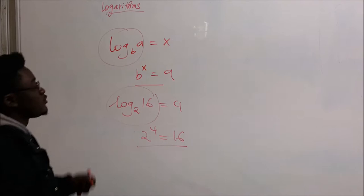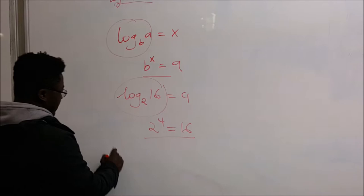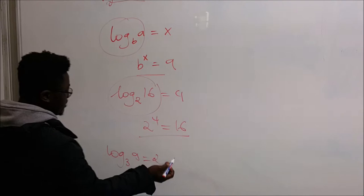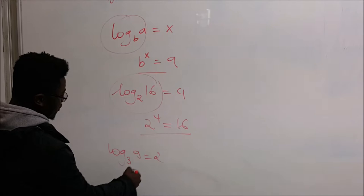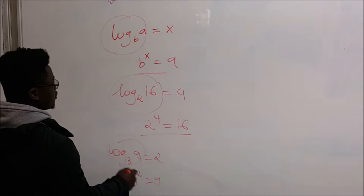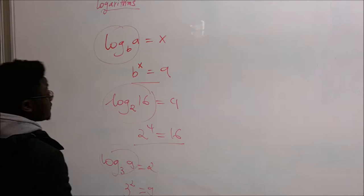So don't get confused. If you take another example, like log base 3 of 9, it's going to give you 2, because the base 3 is actually raised to the power 2 to give 9. So the logarithm is actually giving you the power to which the base is raised to 2 to give 9. That's actually the definition of logarithm.